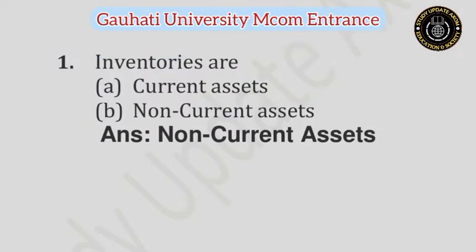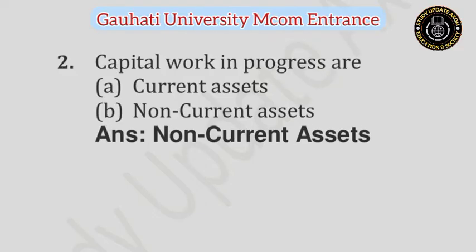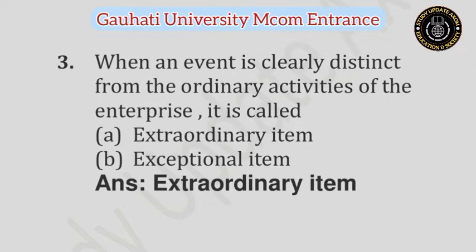Question number 1: Inventories are — Option A: Current Asset, Option B: Non-current Asset. Answer is Non-current Assets. Question number 2: Capital work in progress are — Option A: Current Asset, Option B: Non-current Asset. Answer is Non-current Assets.